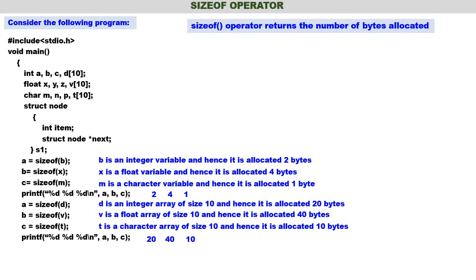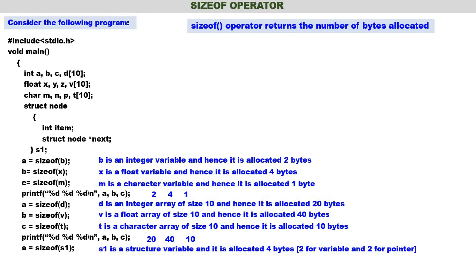Next sizeof(s1). s1 is a structure variable. How many bytes will be allocated for s1? 4 bytes — because inside the structure there are two members: one is 'item' of type integer (two bytes), and the other is 'next' which is a pointer (any pointer requires two bytes). So two plus two is four — totally four bytes are allocated for s1. So 4 will be printed.